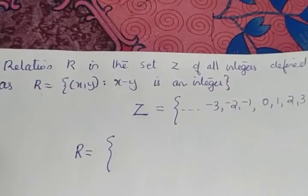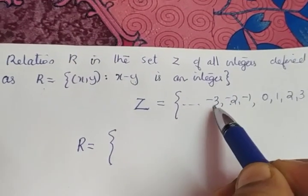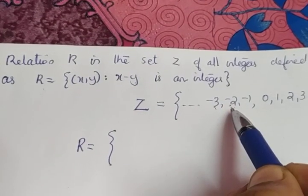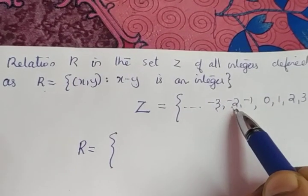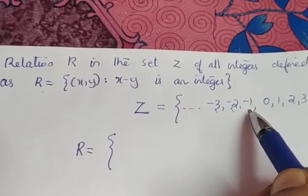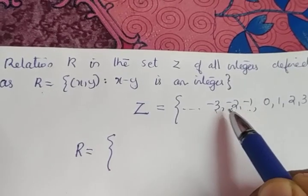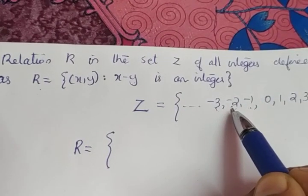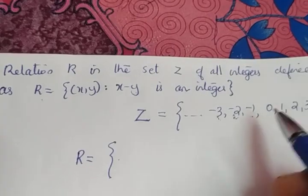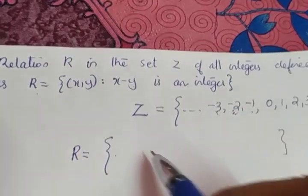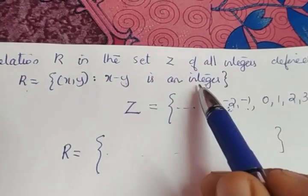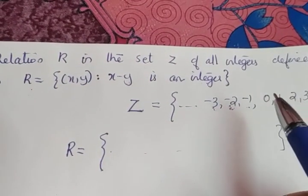R equals, if I am taking two elements minus 3 and minus 2, the difference: minus 3 minus (minus 2) gives you minus 3 plus 2 which is minus 1, an integer. Same case with minus 2 minus (minus 1), which gives minus 1, again an integer. If I subtract any two integers, I will be getting an integer. That means so many elements are there in R. We cannot write all elements in roster form. The condition is: the difference of two integers must be an integer. That happens for all integers.